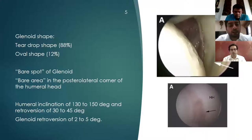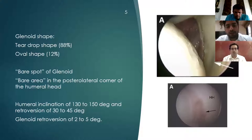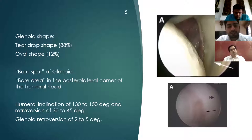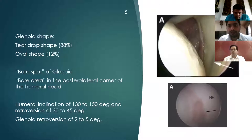The humeral head is thickest in the center. Similar to the glenoid bare area, there is a humeral bare area which lies posterolaterally adjacent to the rotator cuff insertion. The humeral inclination is about 130 to 150 degrees and it is retroverted at about 30 to 45 degrees. The glenoid retroversion is around 2 to 5 degrees.